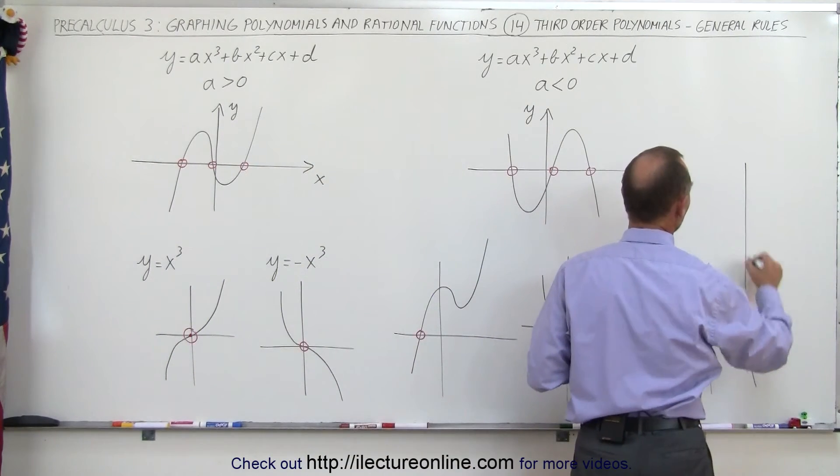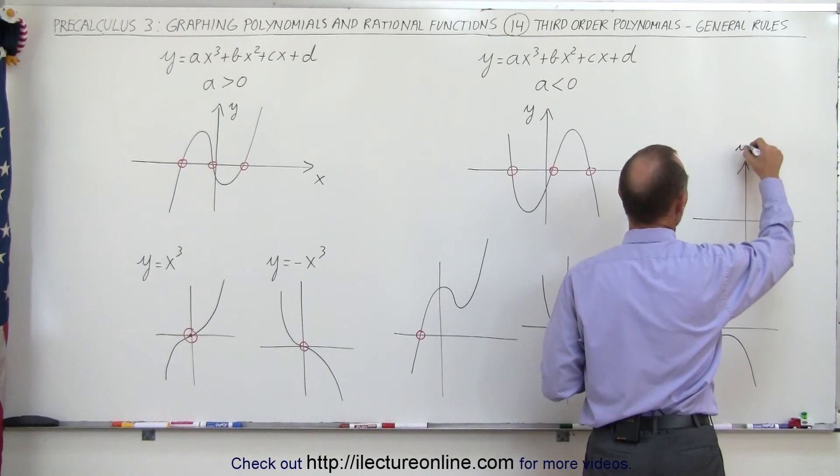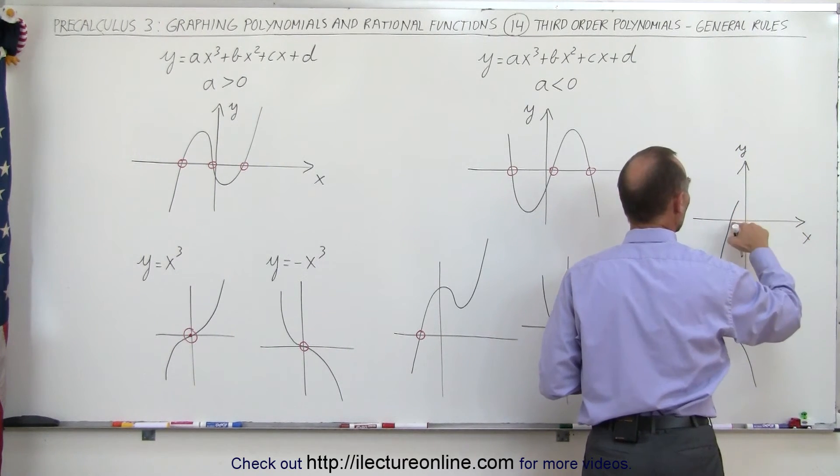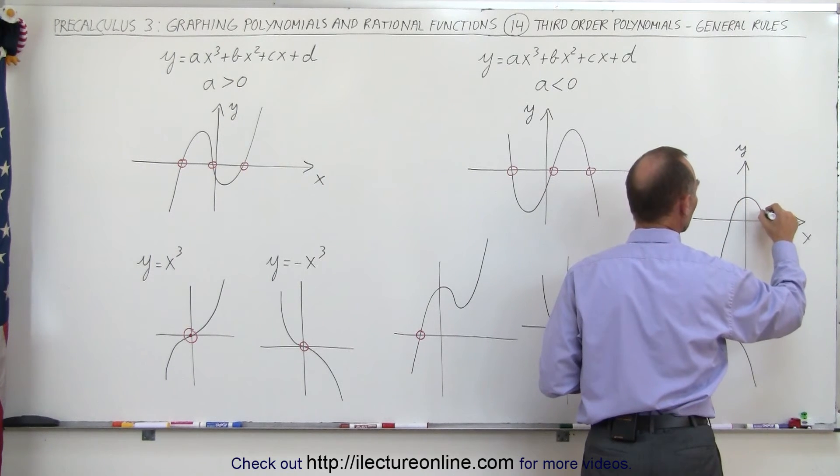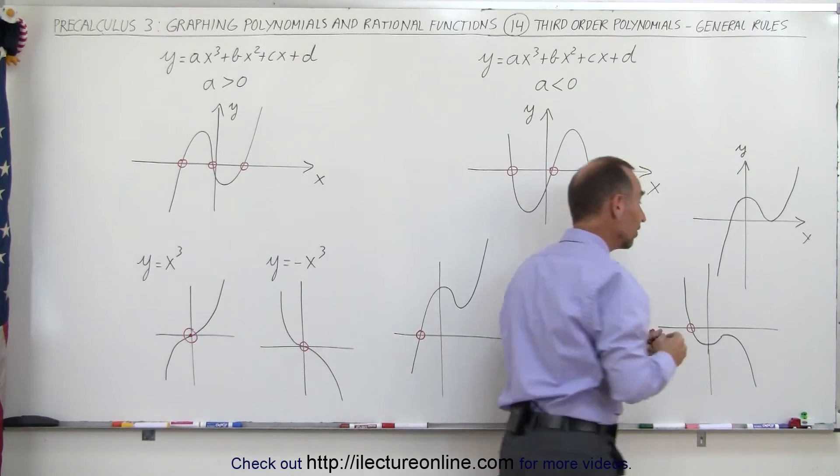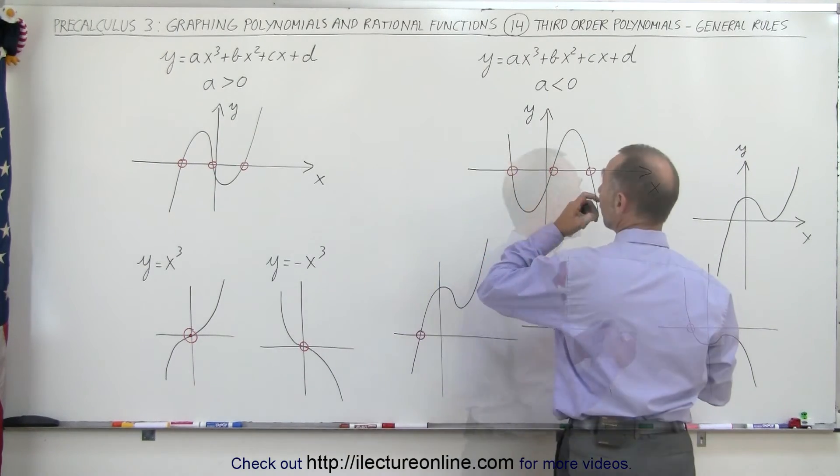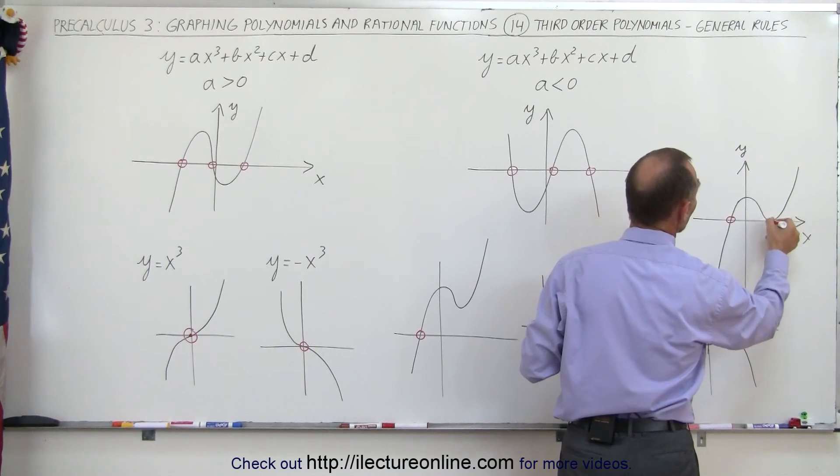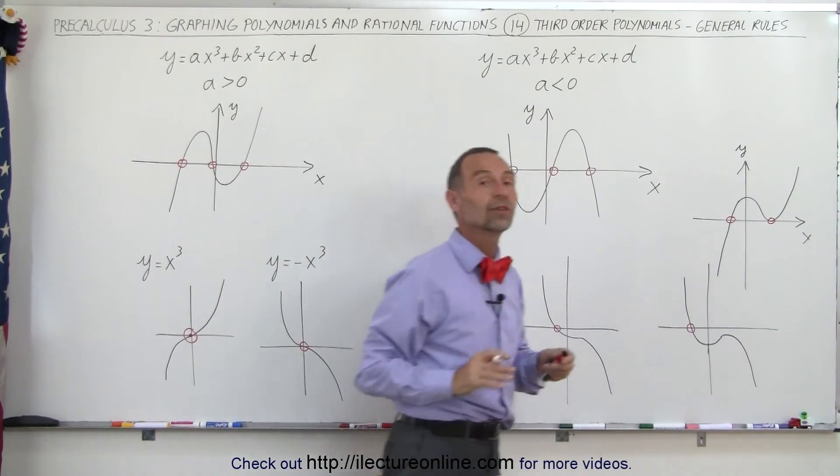So for example, if you have a graph, if this is the y axis, and this is the x axis, and it comes up like this, one root right there, it comes back down, but just touches the line, and then comes back up like this. Now you can see that in this case, the polynomial of third order has a root over here, and has a root right there. So there's only two roots in that case.